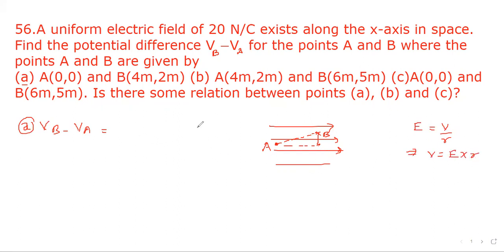Here R will be the difference of the two points, that is the value of x-axis. And E is 20 times, it will be negative because potential will decrease in this direction. So minus 20 times 4 which is minus 80 volt.